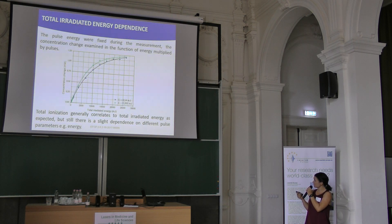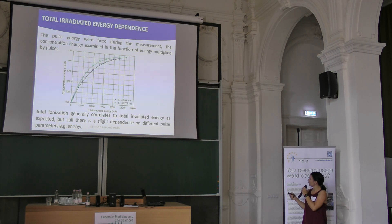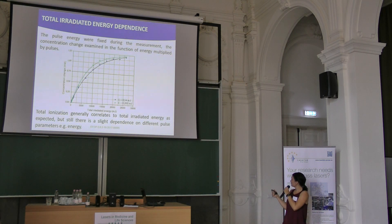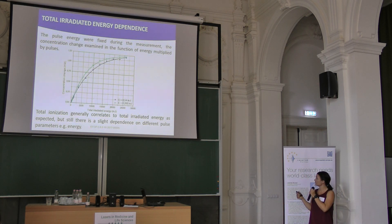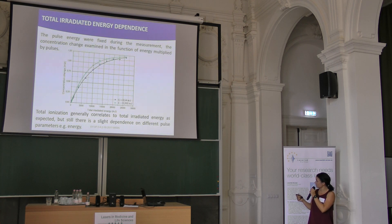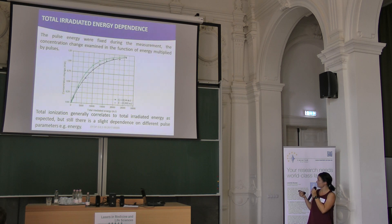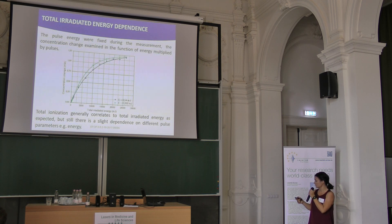The concentration change is shown as a function of energy multiplied by number of pulses. I used two energy levels, and I changed the irradiation time so that the total energy changed. It shows a small difference between using more energy with less time versus less energy with more irradiation time.